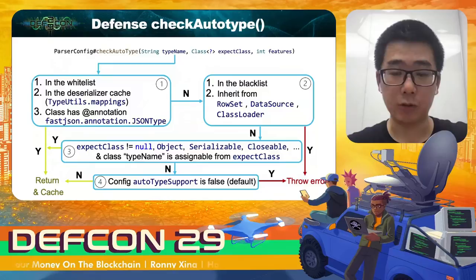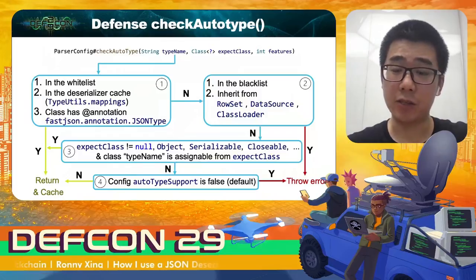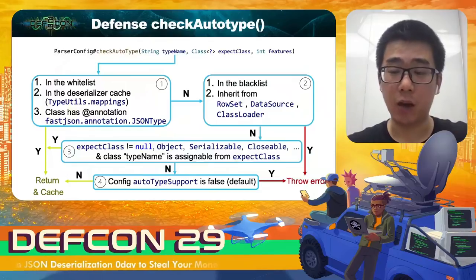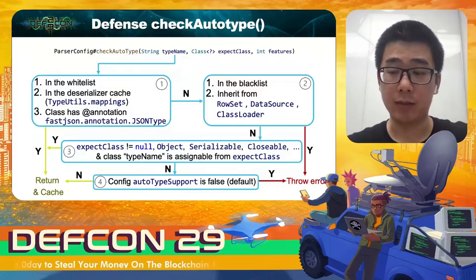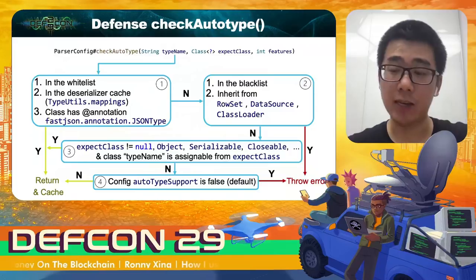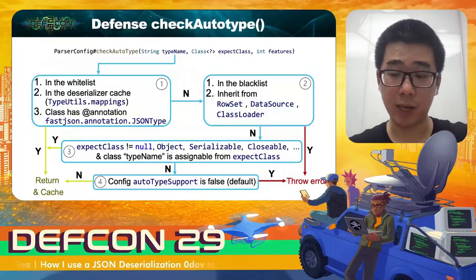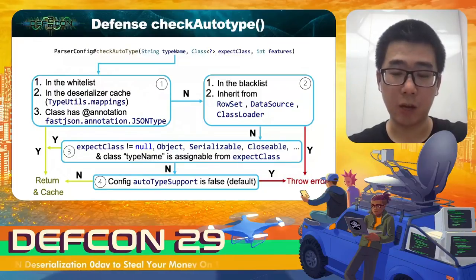Before detailing the check process, we need to know how expectClass is set. ExpectClass means the inheritance relationship. There are two forms: explicit inheritance, where a JSON object starts with two @type keys — the first is the expectClass and the second is the subclass; and implicit inheritance, where a class field typed as an interface triggers the subclass being deserialized. Inside checkAutoType: first, if the target class is in the whitelist, deserializer cache, or has @JSONType annotation, it passes. If the target class is in the blacklist or inherits from dangerous classes like ClassLoader or DataSource, it throws an error. If expectClass is known and the target is assignable from it, it passes. Otherwise, it only passes if the global autoTypeSupport flag is true.